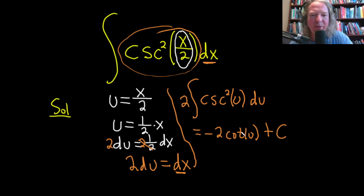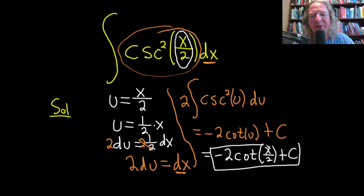So what we'll do is we'll go back to x. So this is negative 2 cotangent of x over 2 plus our constant of integration capital C.